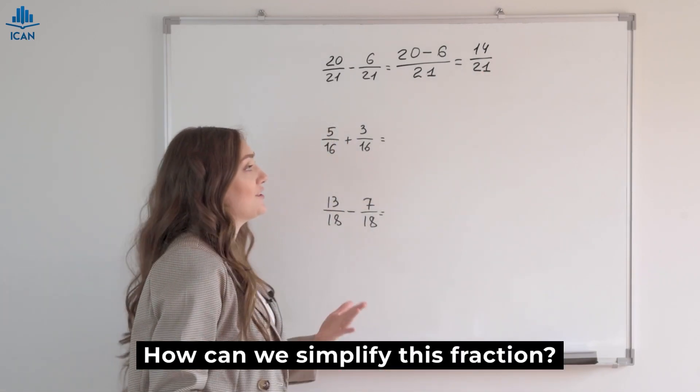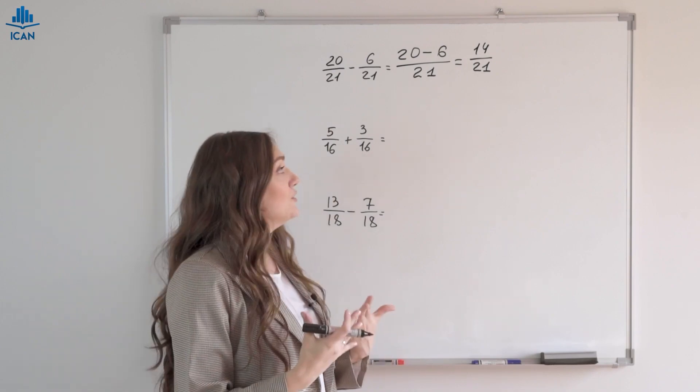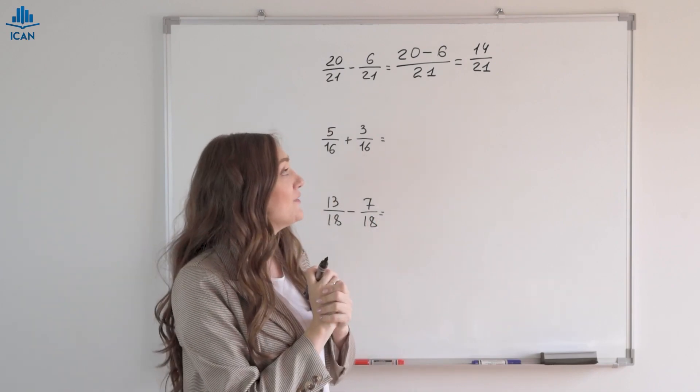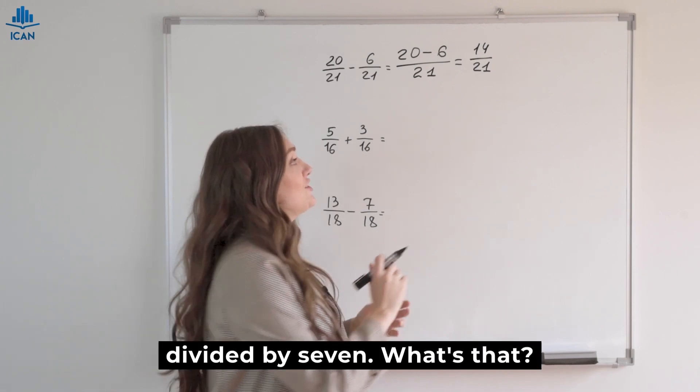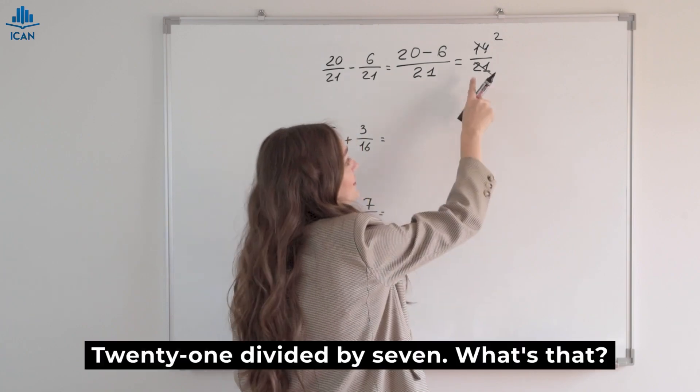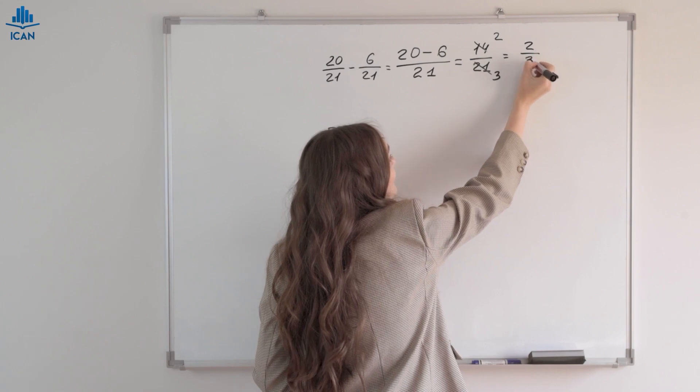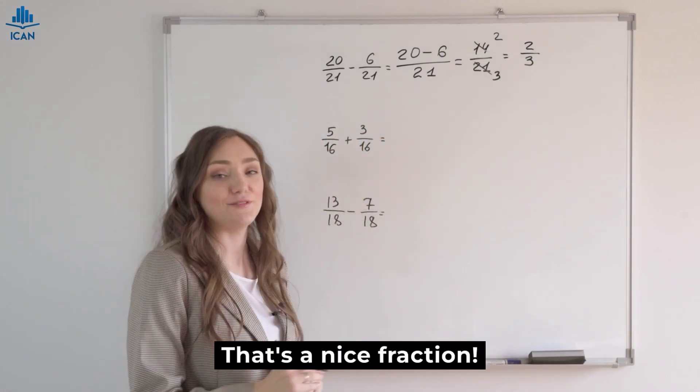How can we simplify this fraction? By seven. Fourteen divided by seven. What's that? Two. Twenty-one divided by seven. What's that? Three. So we get two-thirds. That's a nice fraction.